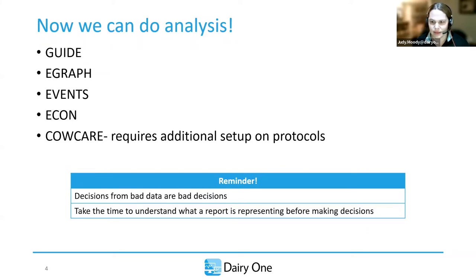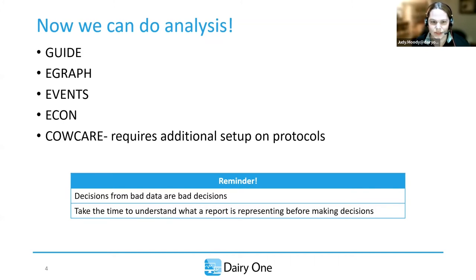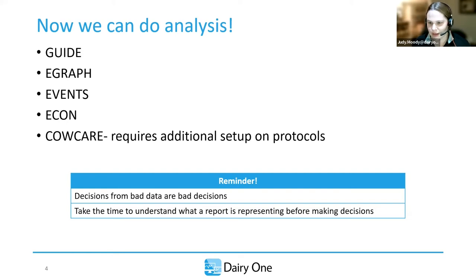Those are the four big ones, and cow care if you've already got all that going for you. And just a reminder that decisions from bad data are bad decisions. It all drives down to: did we do good entry? Are we getting the right information in to make those decisions? And taking the time to understand what the reports are representing before making any decisions — did we understand the graph, ask the additional questions, do everything we needed before making management changes?